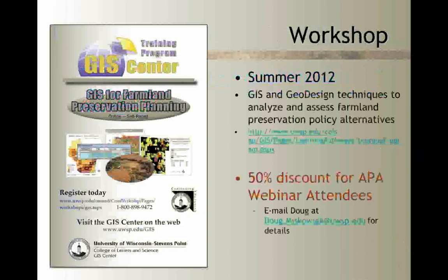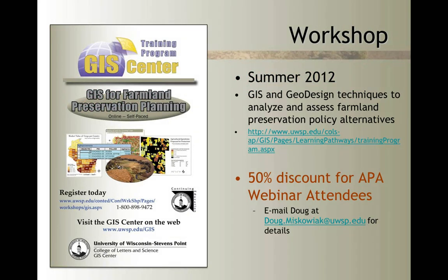That's where I'll stop. I just want to mention this workshop — anyone registered for this webinar gets 50% off. It shows hands-on techniques for using GIS and geodesign to accomplish farmland preservation planning. It's an online self-paced course. If you don't have the tools available, we're offering them via remote desktop — all the data sets and tools needed to take this course. Feel free to email me if you have any questions about registering. I'll hand off to Wade Thompson now. Let's do Wade and then we'll take questions for everybody at the end.